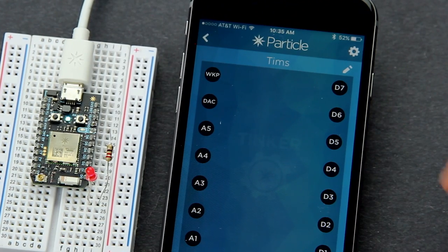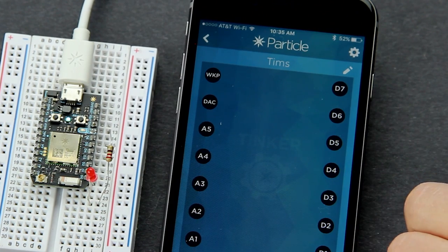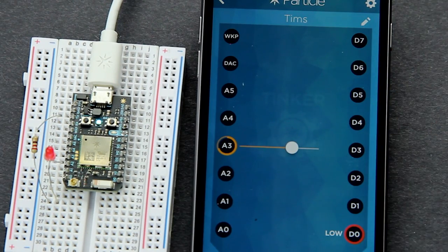To turn something just on or off, we use digital write, but for a more granular voltage output, we're going to use an analog write.